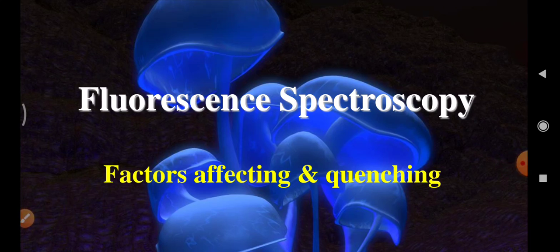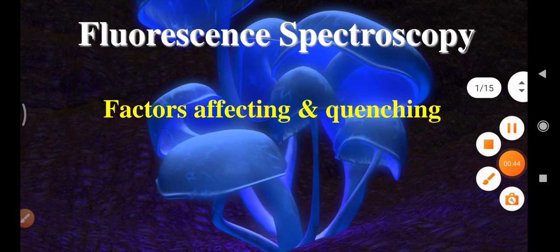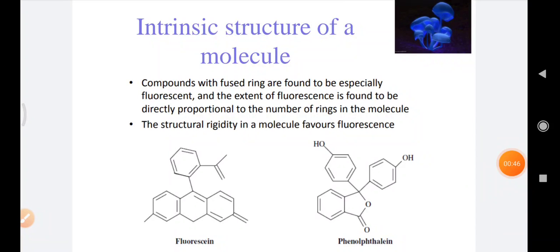Today we are going to discuss different factors affecting fluorescence and the quenching effect in fluorescence spectroscopy. There are two main factors which can affect fluorescence. The first is the intrinsic structure of a molecule, which is itself responsible for the difference in fluorescence. The second is the environmental factors. We can discuss both one by one.